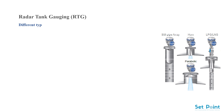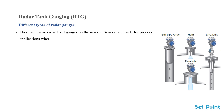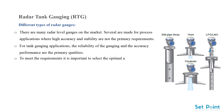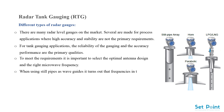There are many radar level gauges on the market. Several are made for process applications where high accuracy and stability are not the primary requirements. For tank gauging applications, reliability and accuracy performance are the primary qualities. It is important to select the optimal antenna design and the right microwave frequency. When using still pipes as waveguides, frequencies in the X-band are optimal.